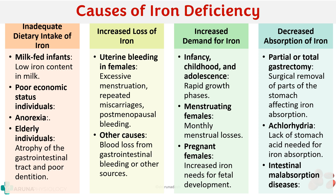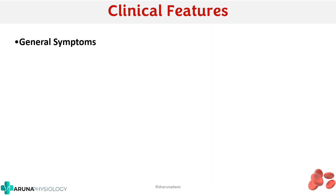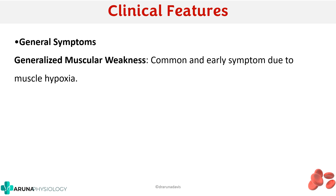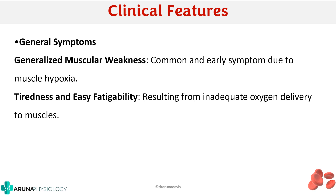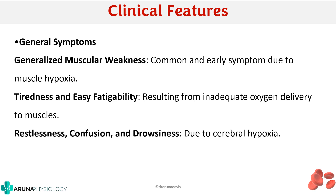The clinical features of iron deficiency anemia include general symptoms common to all anemias: generalized muscular weakness due to muscle hypoxia, tiredness and easy fatigability due to inadequate oxygen delivery to muscles, and restlessness, confusion, and drowsiness due to cerebral hypoxia. The underlying problem in anemia is hypoxia, which explains all the general symptoms.